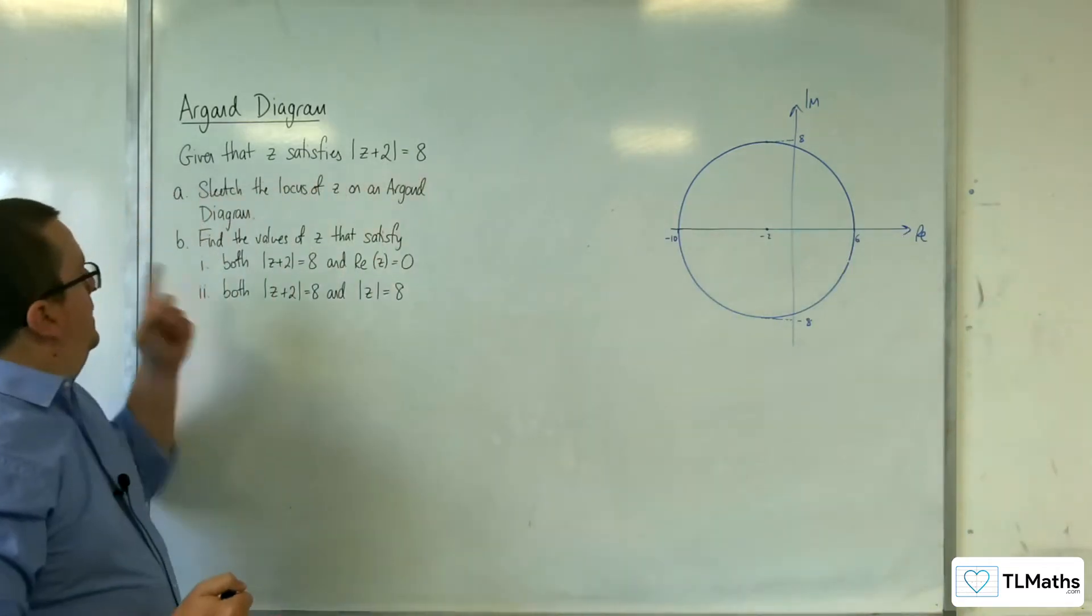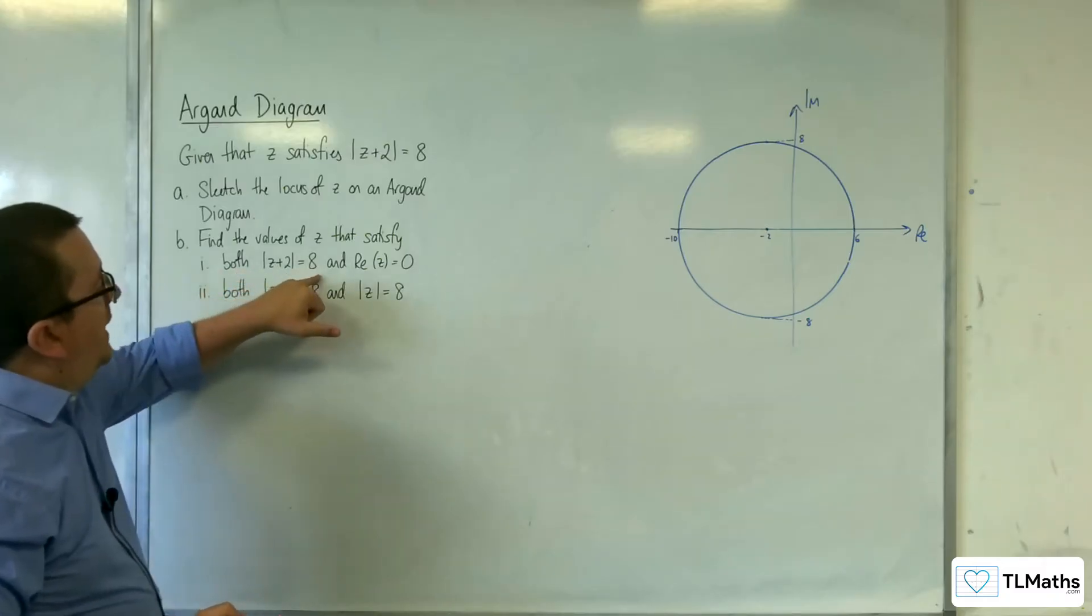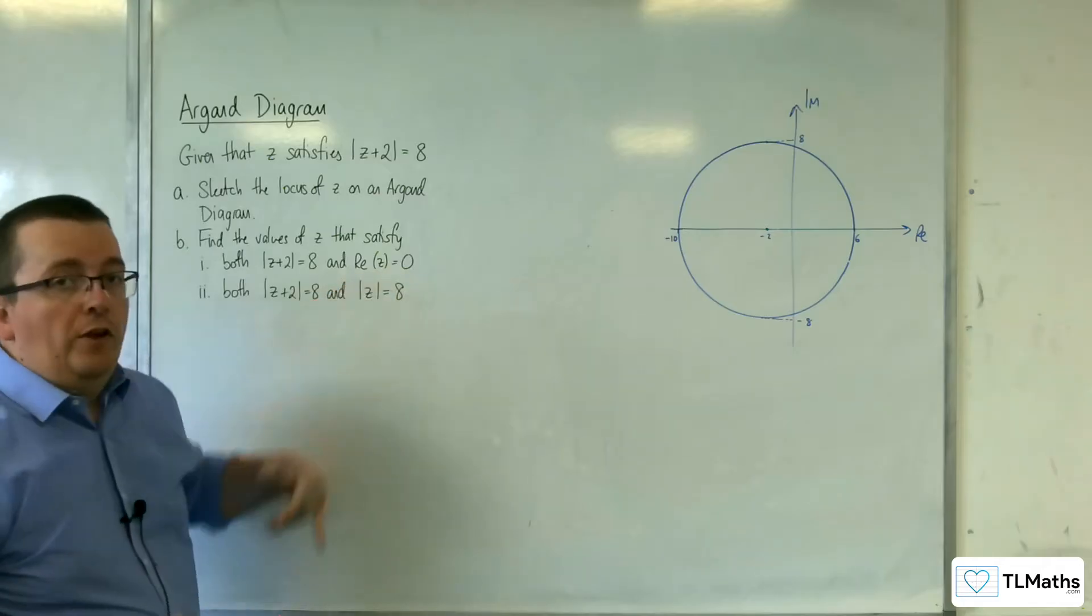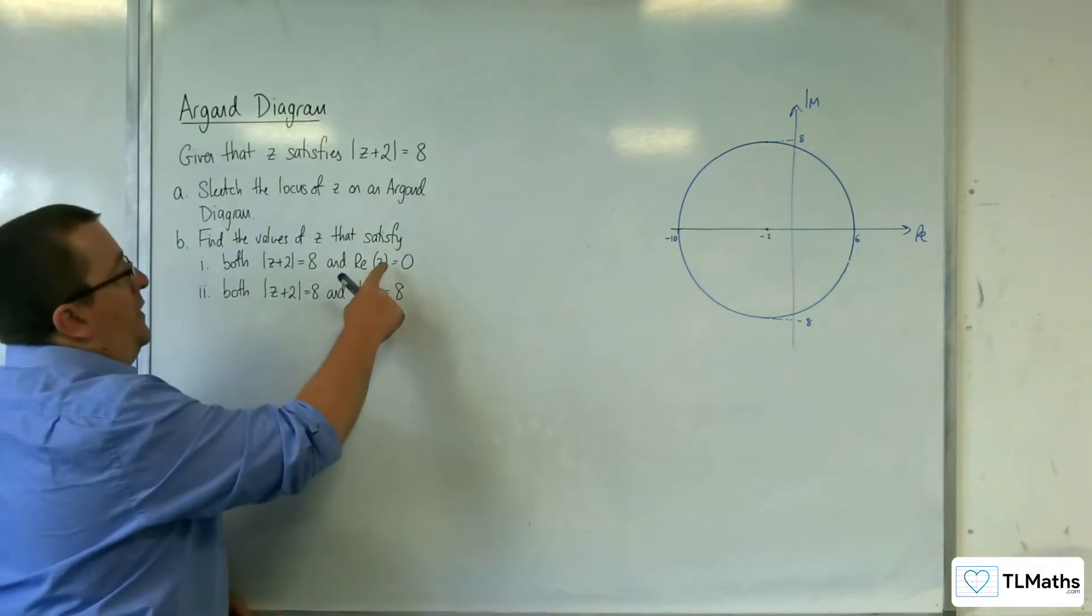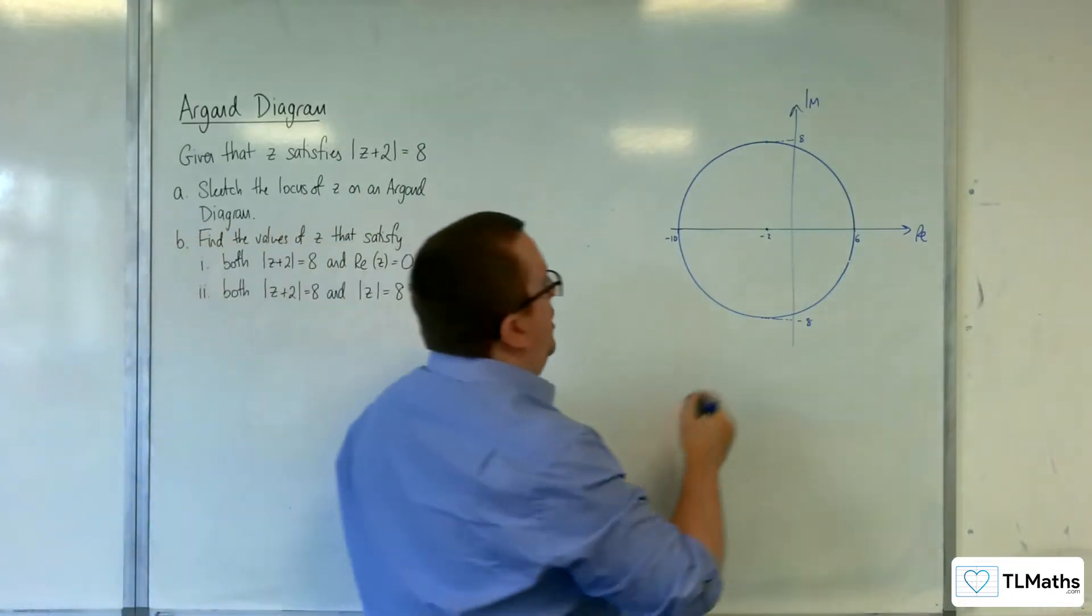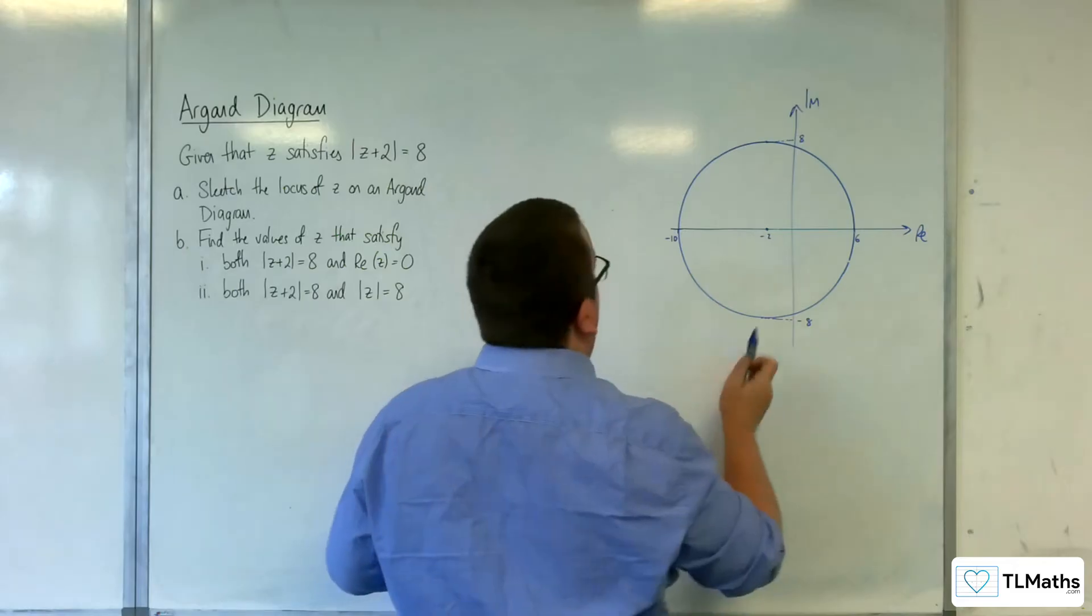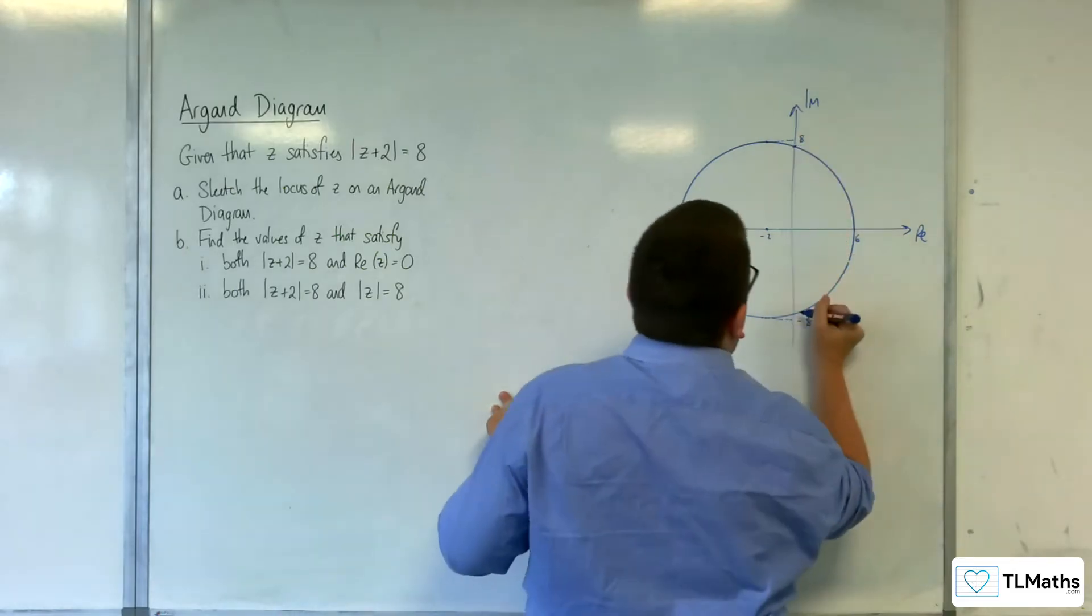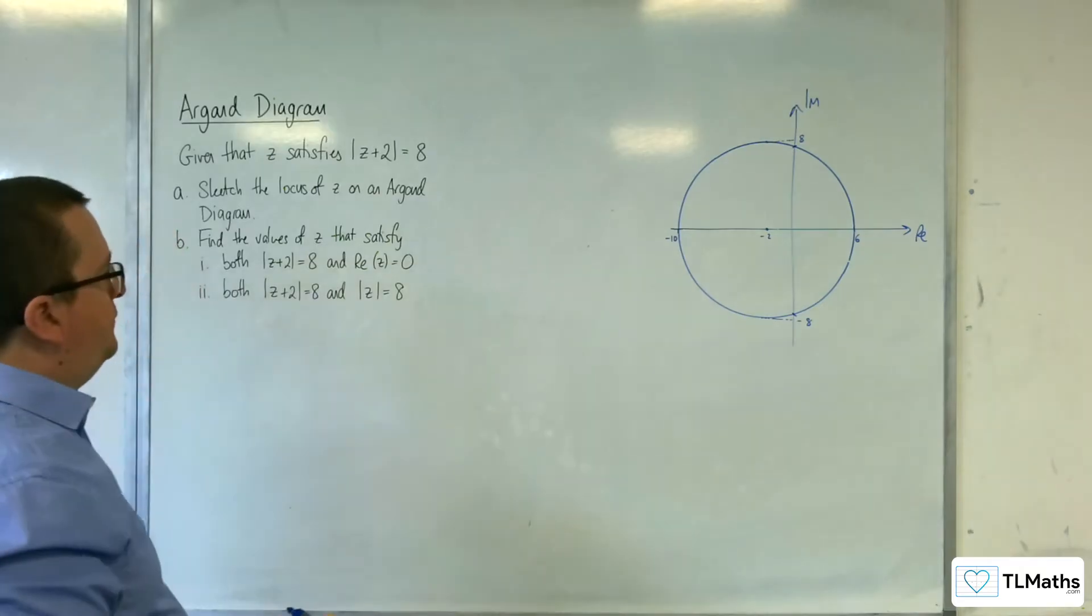Right, for part b then, find the values of z that satisfy. So, one, both z plus 2 modded is equal to 8, and the real part of z is 0. Now, if I'm saying that the real part of z is 0, then I'm just looking at the imaginary axis. So, where does the circle intersect the imaginary axis? That's what I'm being asked for here.